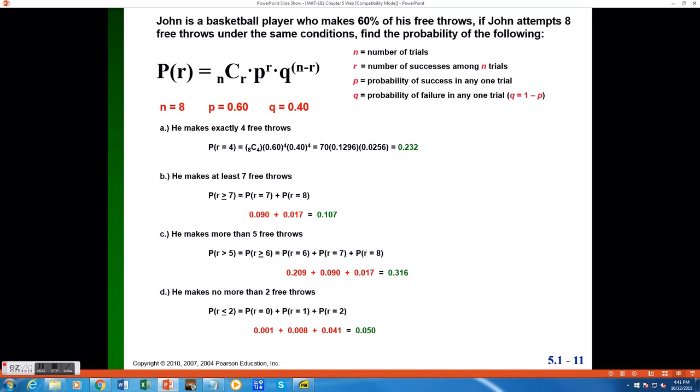Now this example would qualify as a binomial experiment. There are a fixed number of identical repeated trials, and those are him shooting his eight free throws. So the number of trials in this example would be eight. Now each trial results in one of two outcomes, either he makes the free throw or he doesn't. If I classify making the free throw as a success and missing it as a failure, this will also qualify as a binomial experiment.